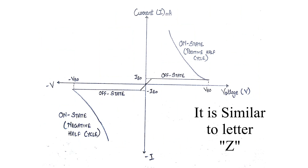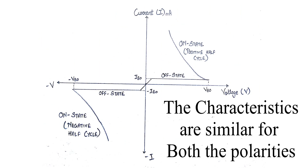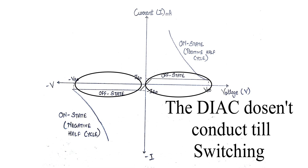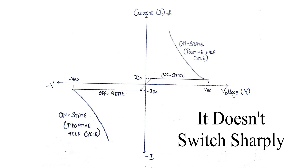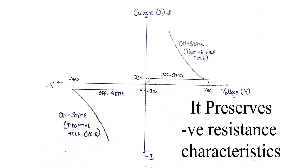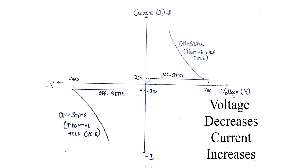The VI characteristics of DIAC looks like the letter Z due to its symmetrical switching characteristics for each polarity of the applied voltage. The DIAC performs like an open circuit until its switching voltage is exceeded. At that point, the DIAC conducts until its current decreases towards zero. Because of its construction, it doesn't switch sharply into a low voltage condition at a low current level like the triac or SCR. The DIAC preserves an almost continuous negative resistance characteristic, meaning voltage reduces with increasing current. Unlike the triac and SCR, the DIAC cannot be expected to maintain a low voltage drop until its current falls below the holding current level.